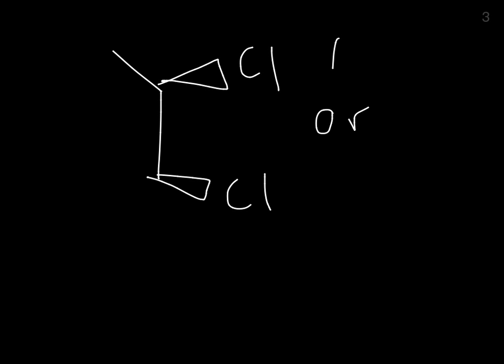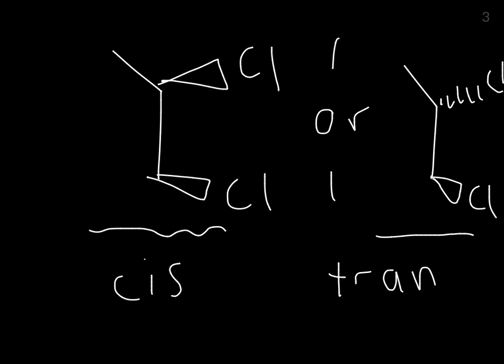Or, you could end up with compounds that look like this. So, you have one in, one out. This is the cis isomer, and this is the trans isomer. Trans meaning opposite side, cis meaning same side.